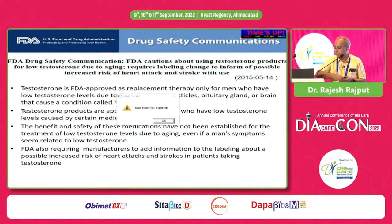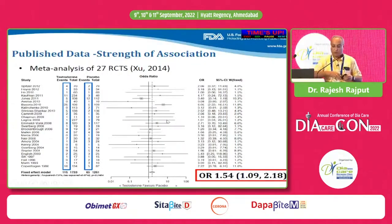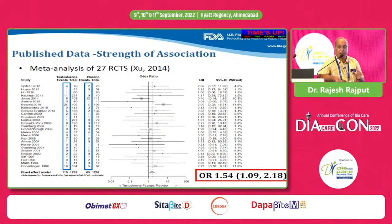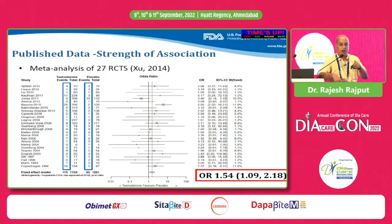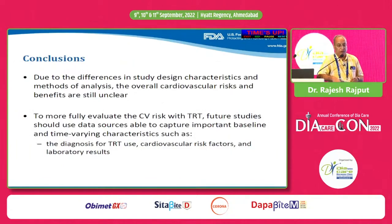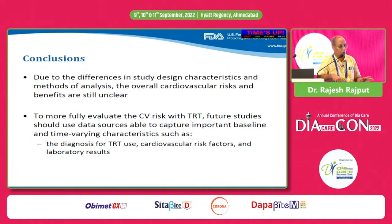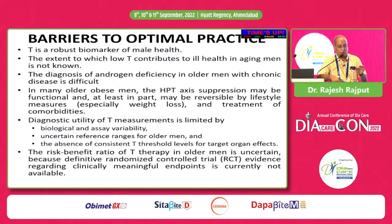Coming to the US FDA mandate: a meta-analysis of 27 randomized controlled trials shows an odds ratio of 1.54, meaning that indiscriminate use of testosterone therapy in all type 2 diabetic individuals actually increases cardiovascular risk. Therefore, it is currently not recommended to use testosterone indiscriminately in all type 2 diabetic individuals with low testosterone levels.